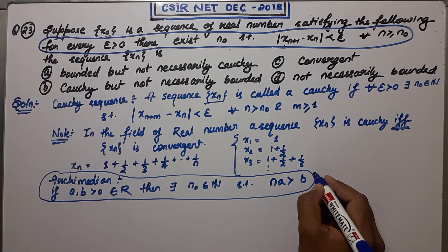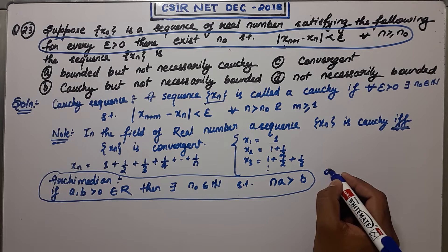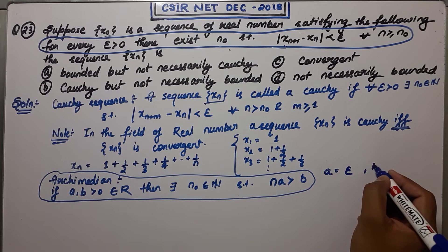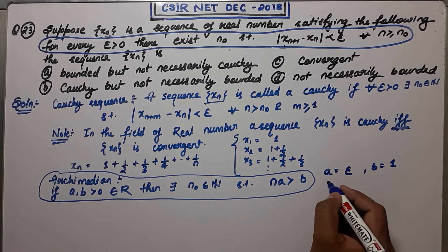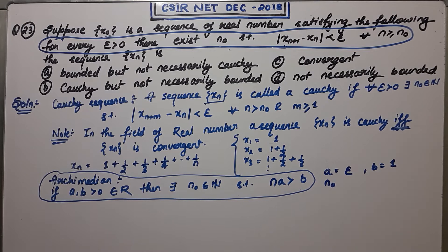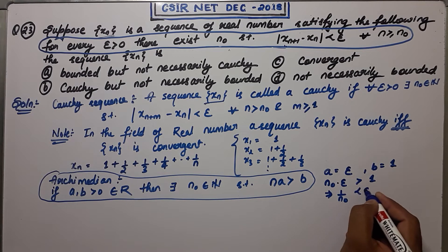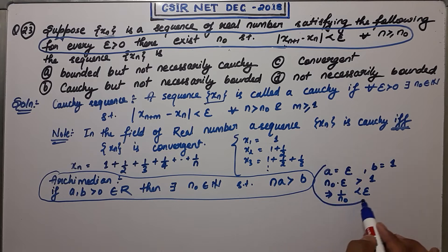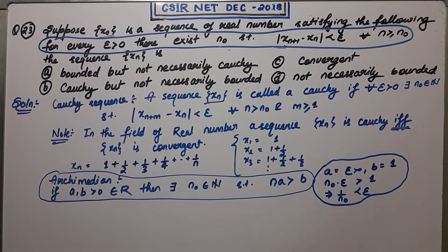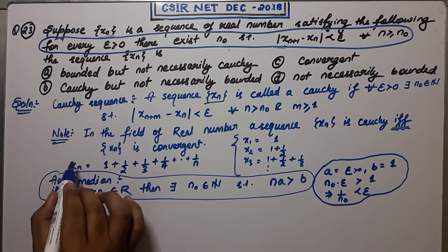By the Archimedean property, choosing a = epsilon and b = 1, we get a natural number n naught such that n naught · epsilon > 1, which means 1/n naught < epsilon. So for every epsilon greater than 0, I can find a natural number n naught such that 1/n naught < epsilon. That's the conclusion we need from the Archimedean property.